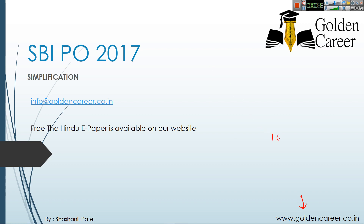The registration fee for SBI PO is 10 rupees only, and for SSC CGL it is 25 rupees. If you are a member of the SBI PO batch, please log in to your account where you will find assignments. If you have any doubt, you can use the ask-to-faculty facility, which will open today by 7 p.m. For any queries or complaints, you can mail us at info@goldencareer.co.in. You can also download The Hindu initiative free from our website.